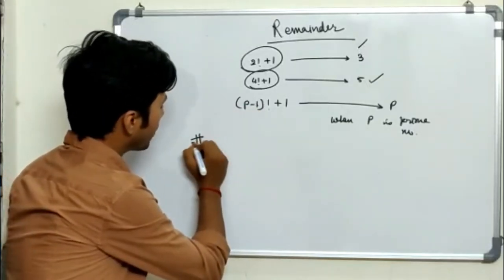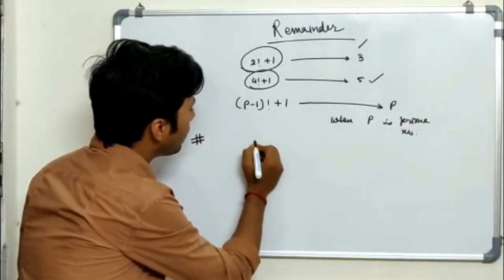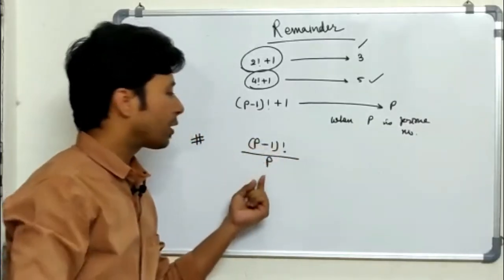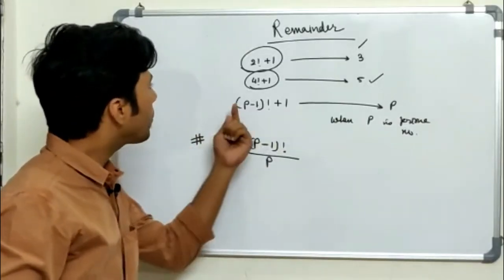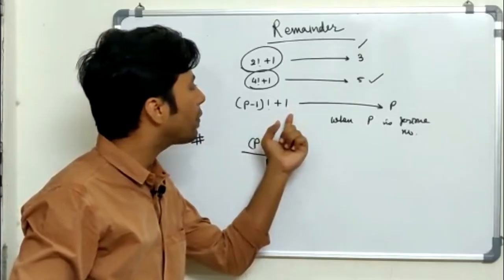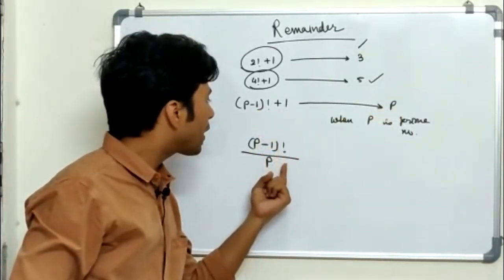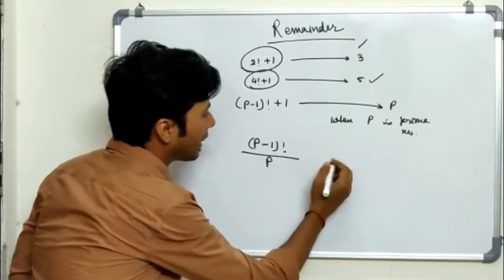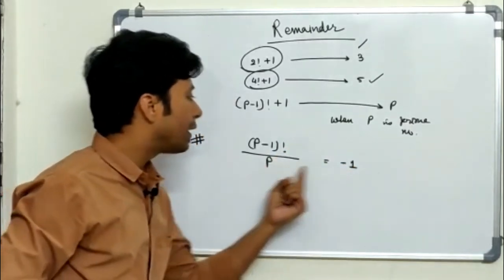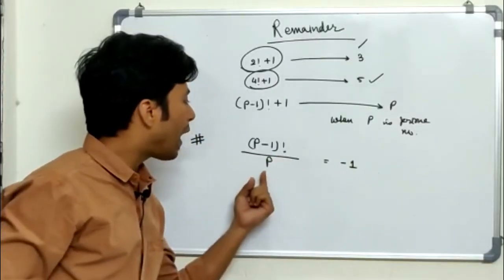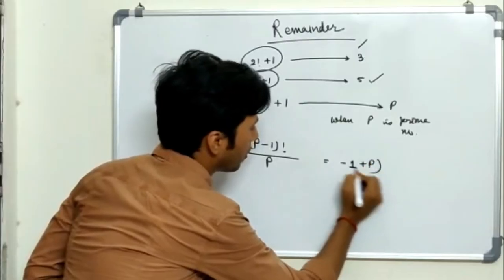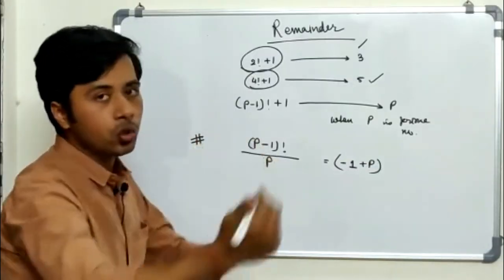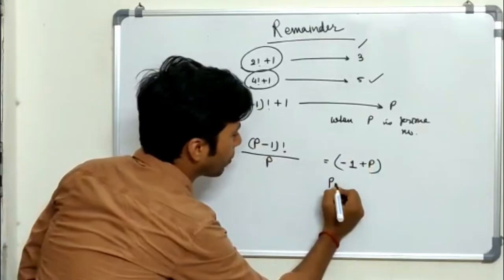So if we look at the first example, 3 was the prime number and 5 was the prime number. In both cases, the expression was a multiple of 3 and a multiple of 5 respectively. From this we can derive: what will be the remainder when (p−1)! is divided by p, where p is a prime number? Since (p−1)! + 1 is completely divisible by p, but here the 1 is missing, so the remainder will be negative 1, which is the negative remainder.